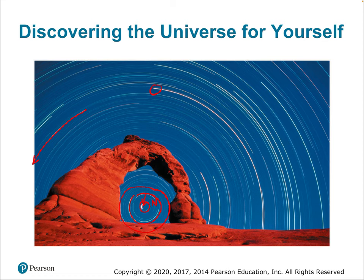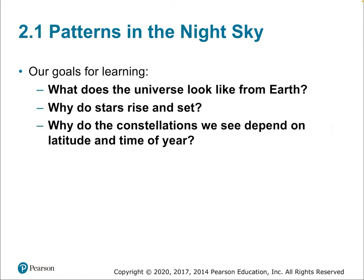This is a great example of all the types of motion we'll be looking at in this chapter. Our goals in Section 2.1 are patterns in the night sky: understanding what the universe looks like from Earth, why stars rise and set — which is because Earth rotates on its own axis, causing apparent rising and setting — and why the constellations we see depend on latitude and time of year.